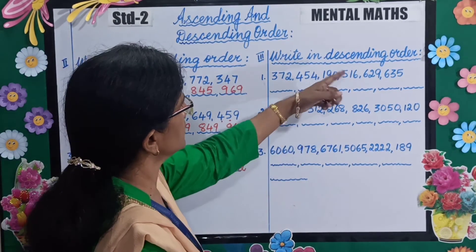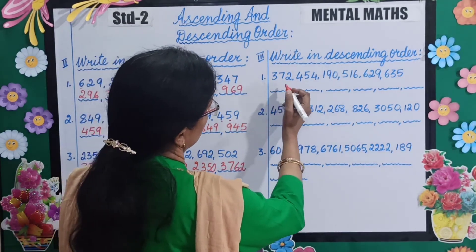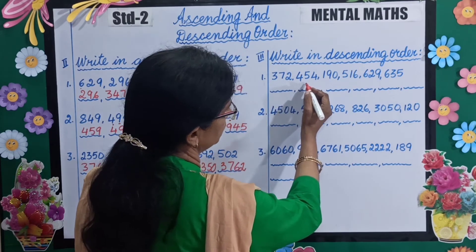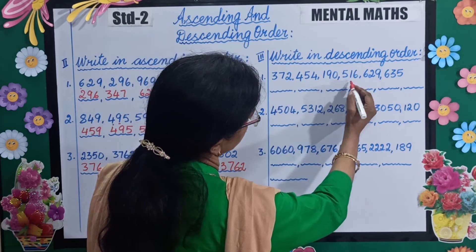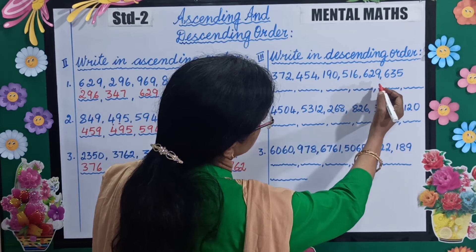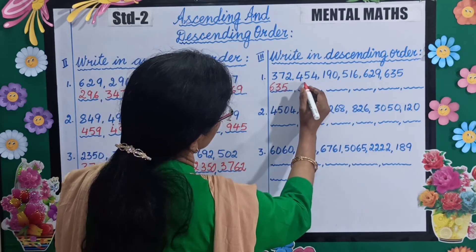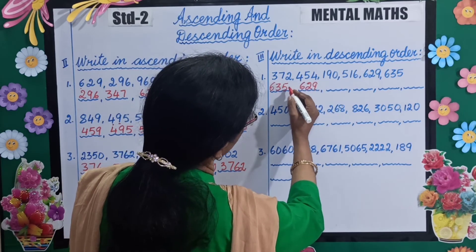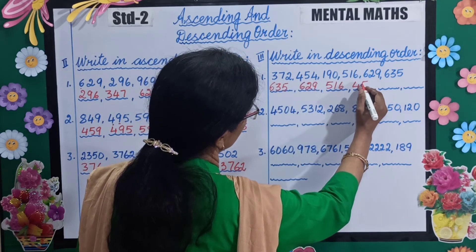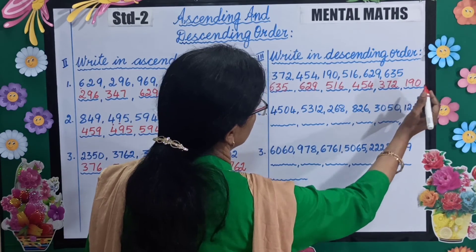Next we go to write in descending order. Descending order means big to small. Number 1 — which is the biggest number? The numbers are: 372, 454, 190, 516, 629 and 635. So the biggest number is 635, then 629, next is 516, next 454, then 372 and last is 190. Very good.